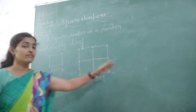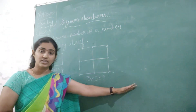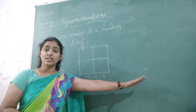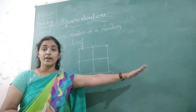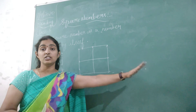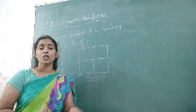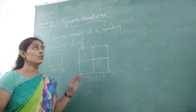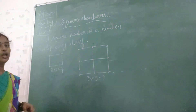Isn't it? So in the same way if I am going to the next, it is 4 into 4, that is 16. 5 into 5, that is 25. So this is the pattern of a square number.